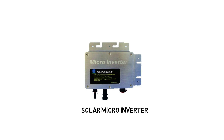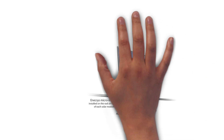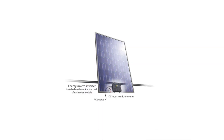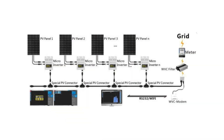Solar micro inverters are small inverters that are connected to each individual panel, as opposed to large inverters that deal with the output of all the panels. The advantage is that if a single panel becomes shaded, the output of the whole string of panels isn't affected. This is because each micro inverter feeds into the grid independently, which would not be the case if one central inverter was being used.